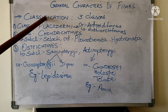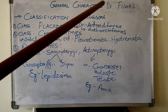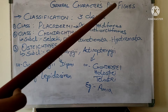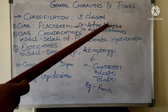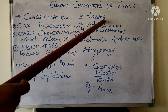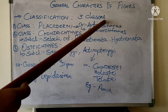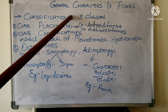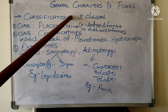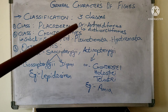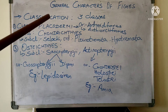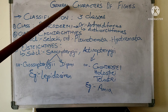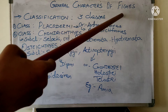Before going to the classification and the general characters, as you all know, fishes are purely aquatic animals. They live in both marine and fresh waters. They are the first animals with true jaws surrounding the mouth and hence these are included in the Gnathostomata. They have paired fins for locomotion and gills for respiration. This is the basic introduction of fishes.